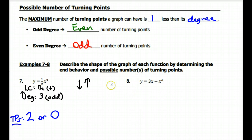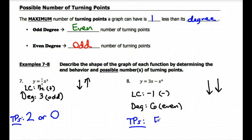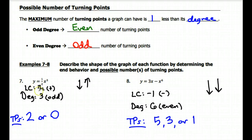For number eight, the highest exponent is six, so the leading coefficient is negative one — giving a negative leading coefficient. The degree is six, which is even. So the right side is going downwards and the left side follows — down and down end behavior. For the possible number of turning points, the degree is six, so the maximum is five. But we could also have an odd number below five — three turning points or one turning point. That was a lot of information, but a lot of it is very basic. Feel free to review any of it, especially the new parts, and send me an email if you have questions. Have a nice day — you're all wonderful people, take care.